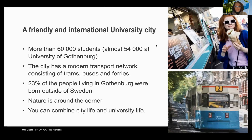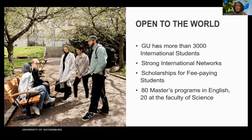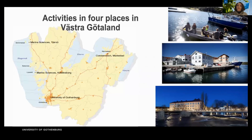Gothenburg University is really open to the world — we have more than 3,000 international students and very strong international networks with multiple countries. There are scholarships for fee-paying students. Out of 80 master's programs in English, 20 are at the Faculty of Science. The main headquarters are in Gothenburg, but you also have marine sciences in Tjärnö and Kristineberg. If you study marine science, you might have some expeditions there, and if you study conservation, you might have the opportunity to go to Mariestad.